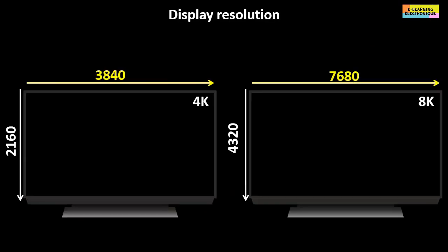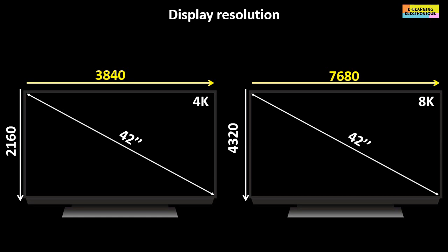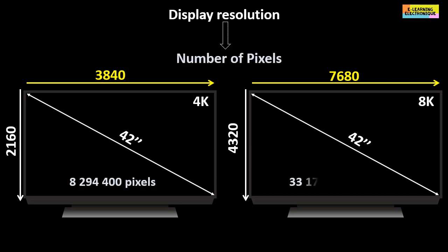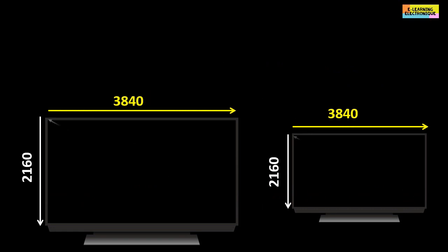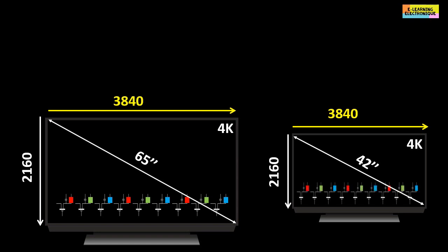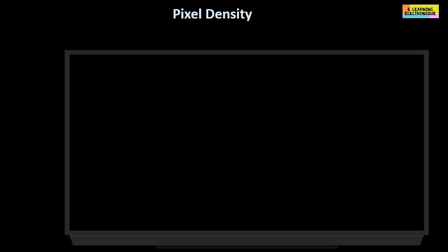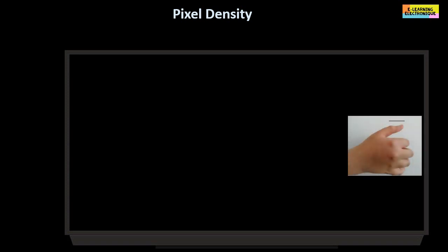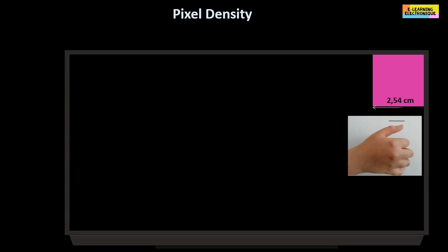Two screens can have the same size but differ in the number of pixels each contains. At equal size, the higher the number of pixels, the better the shades of light and colors will be and the more detail we will see. Conversely, with two screens of different sizes but the same number of pixels, on the larger screen the pixels will be more widely spaced, while on the smaller screen the distance between pixels will be smaller. To express this characteristic we use the term pixel density, calculated using the inch as a unit of measurement. An inch is equivalent to 2.54 centimeters.